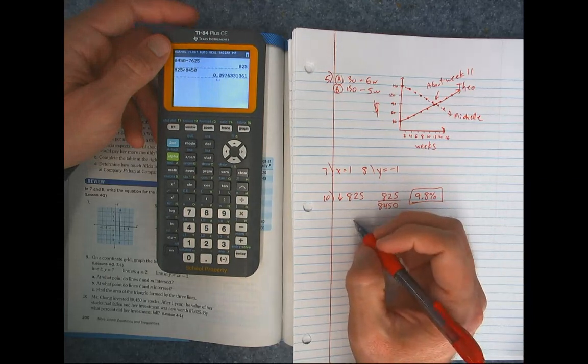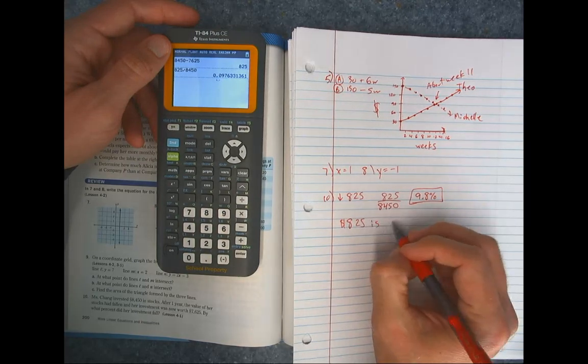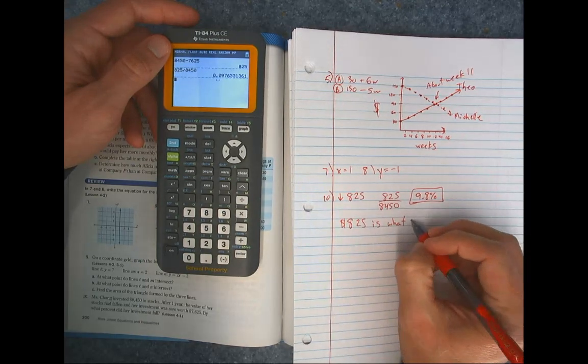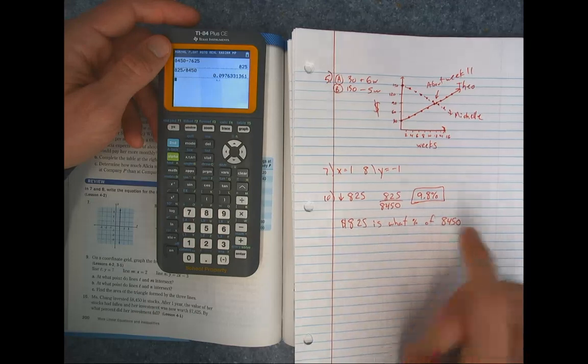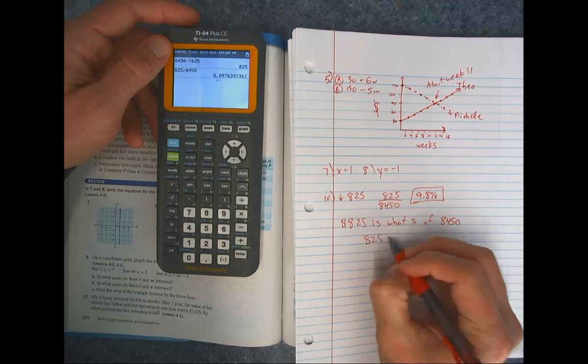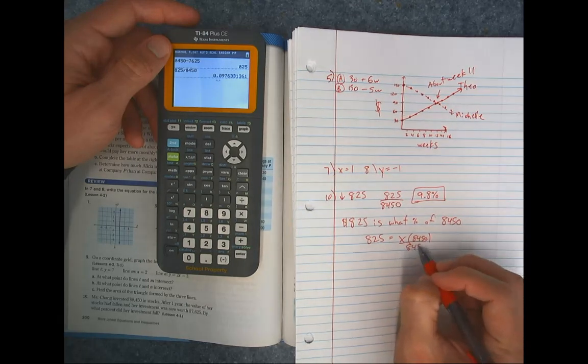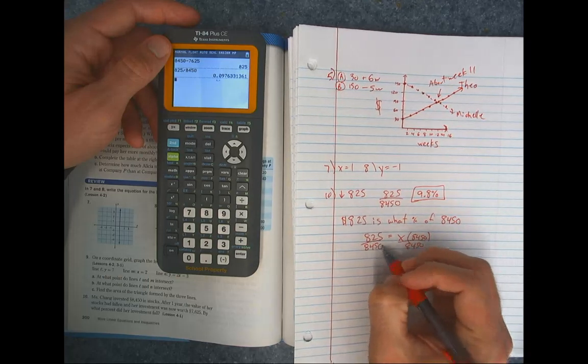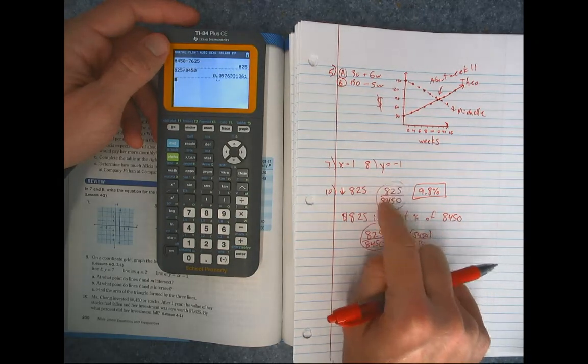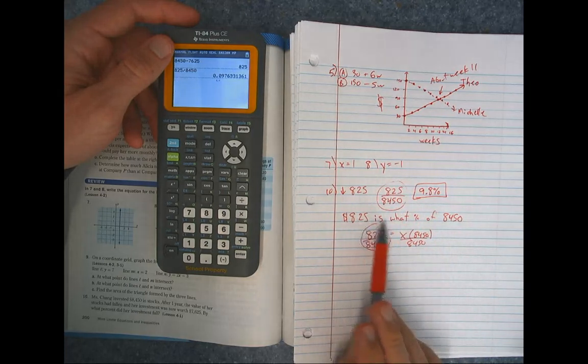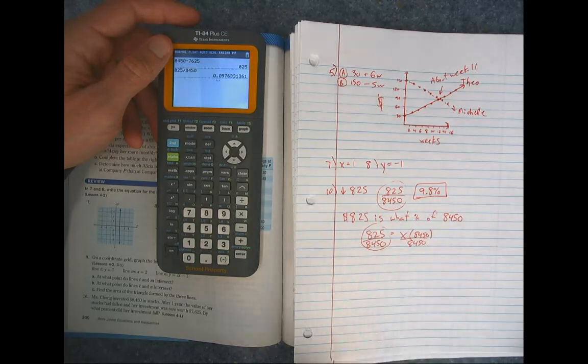Now the way we would do this with an equation, I know we're really focused on that. You would say $825 is what percent of 8,450? Because this is how much it fell. We want to know what percent it is compared to the original. So then you'd write the equation 825 equals X percent of 8,450. And then to solve it, you would divide by 8,450. And then you can see this division right here is right here. So you're doing the same thing. So if you know that when you're comparing two numbers, you can divide, you can go straight to it. If you want to see it, though, written out as the equation for consistency, then you would write it out just like that. And then, of course, you get the same answer.